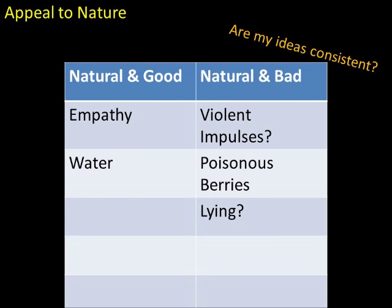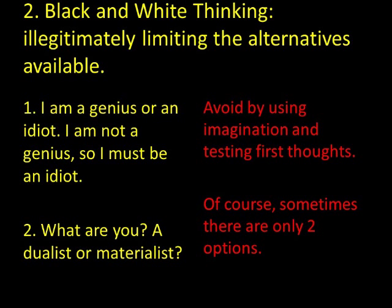To avoid the appeal to nature fallacy, don't assume that natural is good or unnatural is bad. One activity is to use a two-column chart: on one side, natural good acts; on the other, natural bad acts. Then create another chart with unnatural good acts and unnatural bad acts. The point is that it's inconsistent to argue goodness can be derived from naturalness alone, since you believe some natural acts are bad. Ethical thinking does involve reason, and referring only to natural or unnatural reasons commits this fallacy.